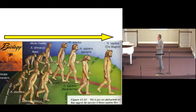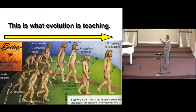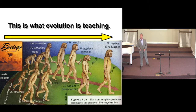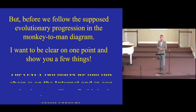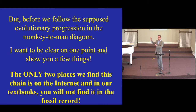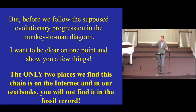This is what we'll be working from tonight — this phylogenetic trace from a biology textbook. We're interested in the arrow that leads to man, tracing the supposed evolutionary progression to modern man. But you only find this perfect phylogenetic chart in two places: the internet and, unfortunately, textbooks. Once you leave those, you will not find it anywhere — you definitely will not find it in the fossil record.